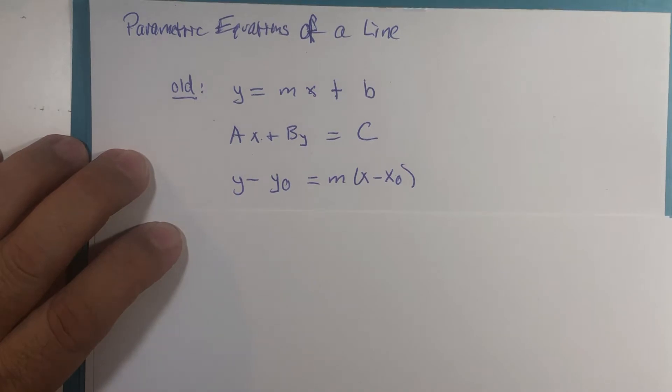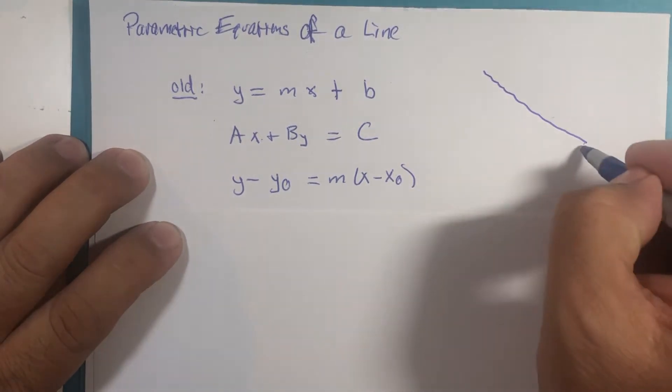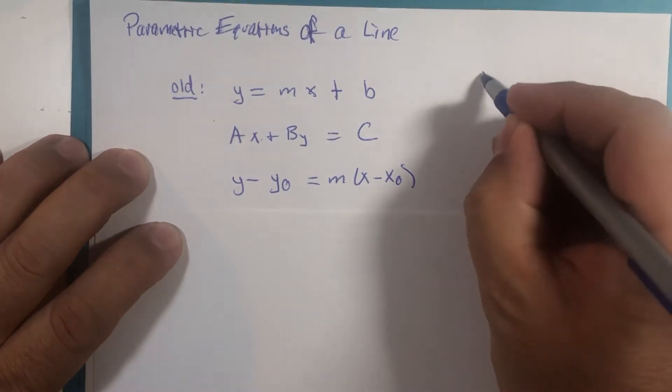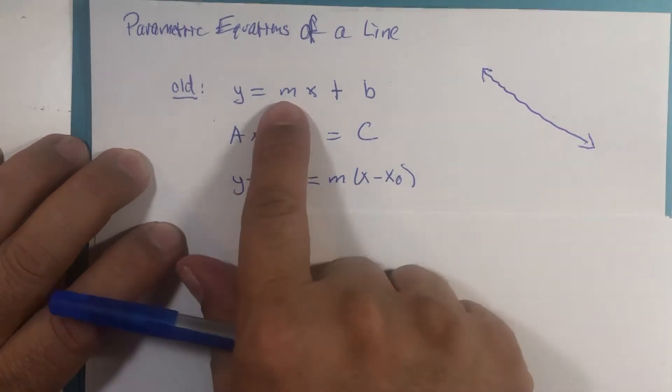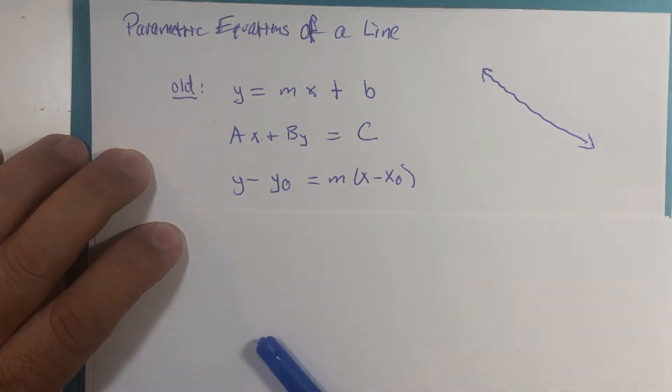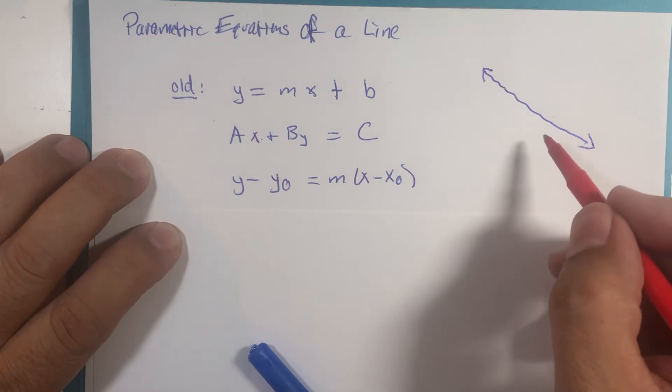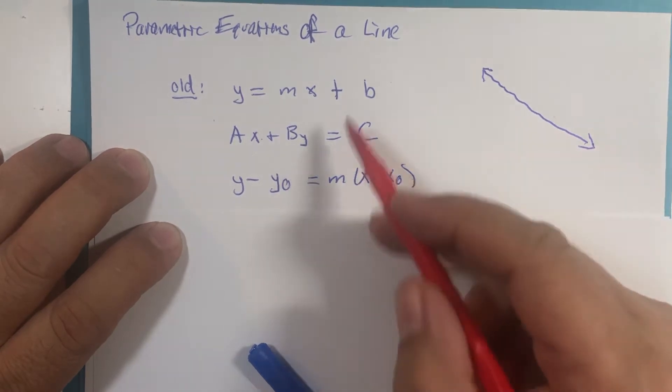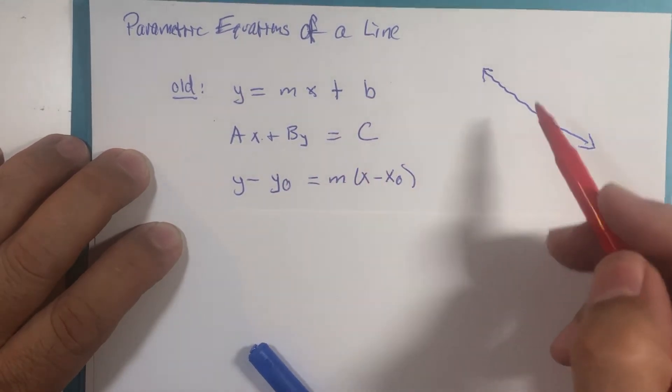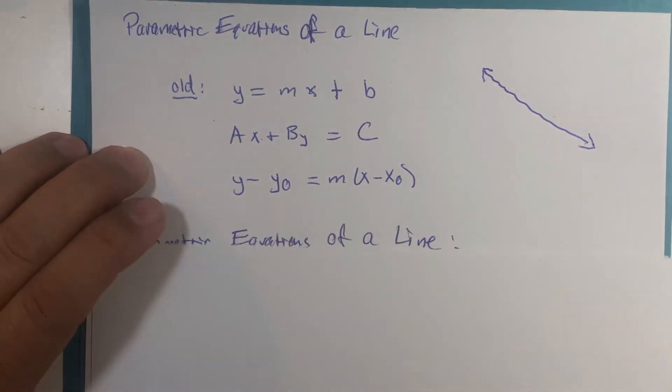One thing all of these have in common is they don't really give you the official direction. It's more about providing you the path. So this is what the map looks like. These equations show you a picture of the map. What they don't tell you is are you going this direction or that direction, how fast are you going, what is the magnitude. None of these equations do that for a line.